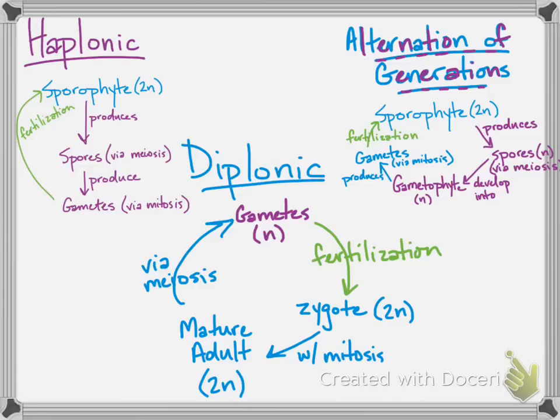Diploid adults form gametes through meiosis, as discussed in the previous screencast, which continues the life cycle. Those are the three major types. Make sure to know the diplonic cycle before anything else, because that is the life cycle of humans.